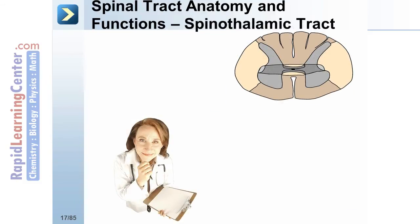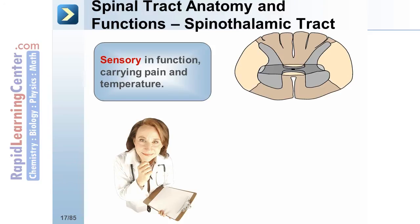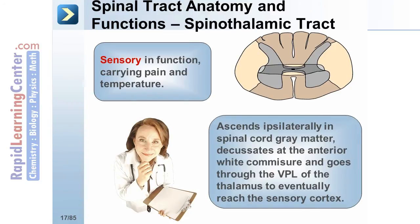The second spinal tract is the spinothalamic tract. It is sensory in function, carrying pain and temperature sensation. The spinothalamic tract ascends ipsilaterally in spinal cord gray matter, decussates at the anterior white commissure, and goes through the VPL of the thalamus to eventually reach the sensory cortex.